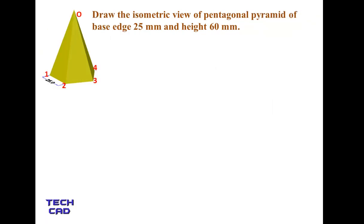In this tutorial we are going to discuss the isometric view of a pentagonal pyramid. The base edge is 25 mm and the height of the pyramid is 60 mm. This is the pentagonal pyramid with the 25 mm base edge, its nomenclature, and vertex O.